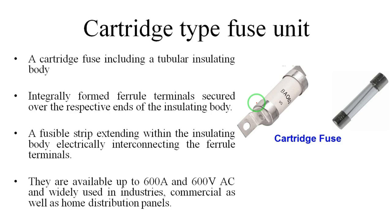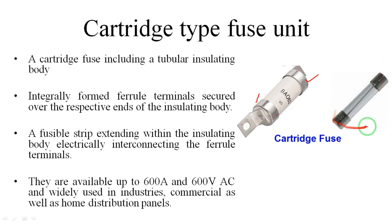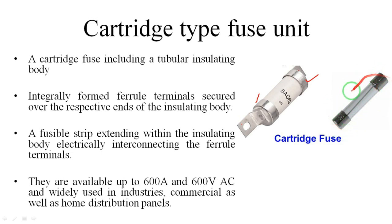The next type is the cartridge type fuse. This type of fuse has a tubular insulating body with two end caps — a front end and a back end — and two connectors. In the center there is a wire called a strip or melting wire. This wire is made up of a fusible strip which is connected to the front and back ends. When overcurrent flows from one side to the other, it melts easily and the circuit becomes open.